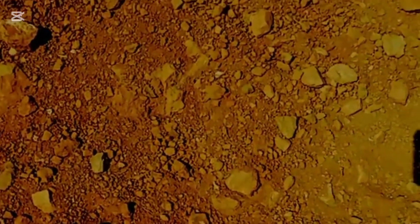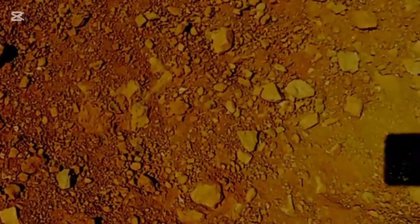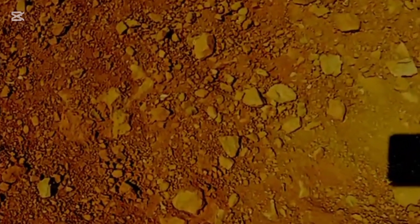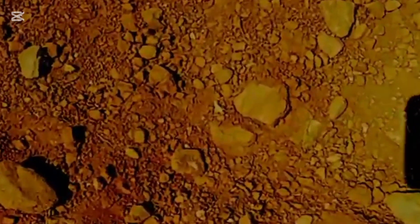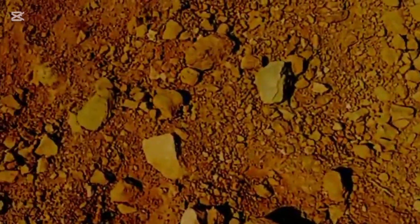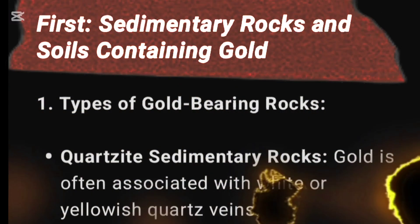Color and texture: Look for rust-colored or dark brown rocks. These may indicate the presence of iron oxides and sulfides, which are often found with gold.